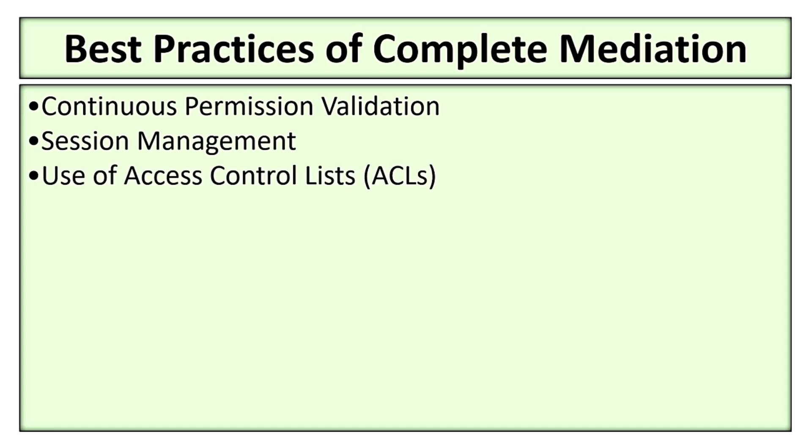Next, implement access control lists (ACLs) to define permissions for every resource and ensure continuous checks. You can also adapt access control policies to dynamic conditions such as role changes or time-of-day restrictions. For example, a service dynamically adjusts access based on factors such as geographical location or time of day.